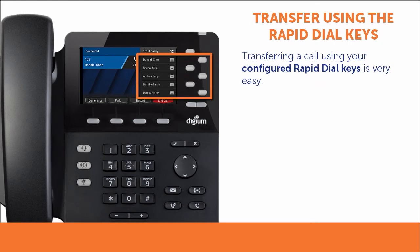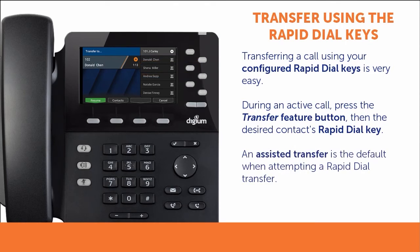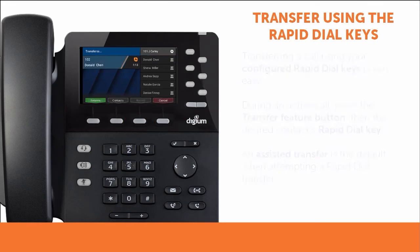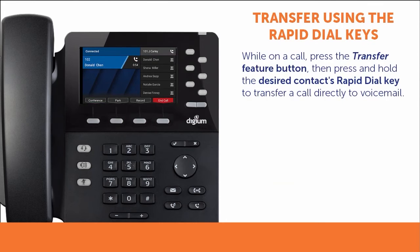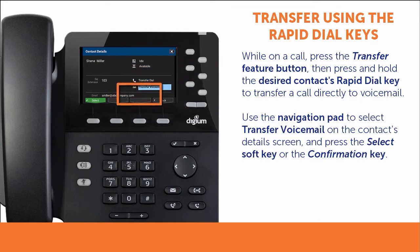If you have rapid dial keys set up with your often used phone numbers, then transferring a call is very easy. During an active call, press the transfer feature button to start the transfer, then push the rapid dial key of the contact to whom you wish to transfer. By default, the system will attempt an assisted transfer. If you want to transfer a call to the person's voicemail directly without ringing their phone, then while on a call, press the transfer feature button or soft key to start the transfer, then press and hold the contact's rapid dial key. This will display the person's contact details where you can select transfer voicemail.